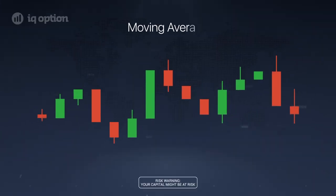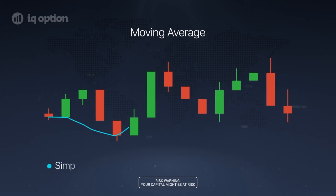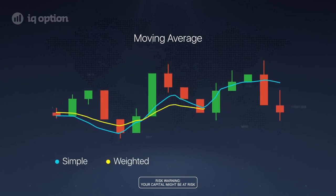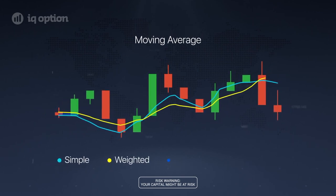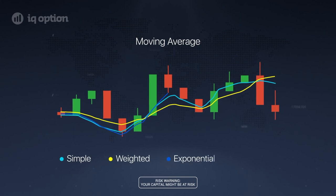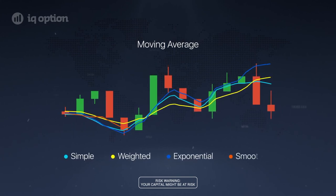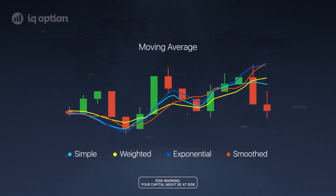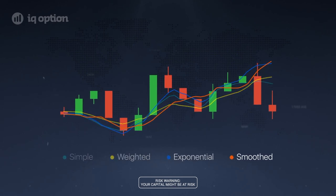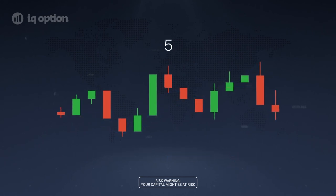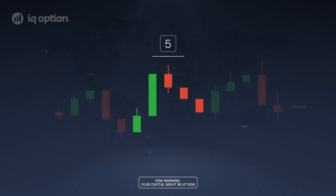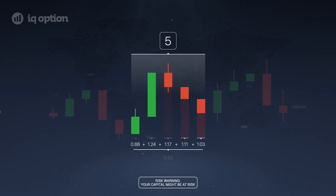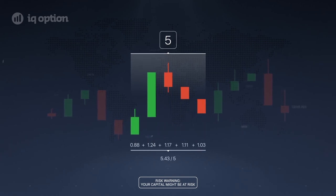A moving average indicator is a main indicator that shows price movement direction. When processing moving averages, the mathematical pricing average of a particular period is measured by candlestick quantity. For example, in order to calculate the value of a five candlestick period, the indicator divides the sum of their closing values by five.